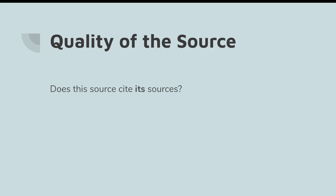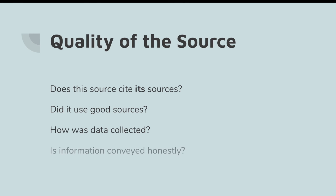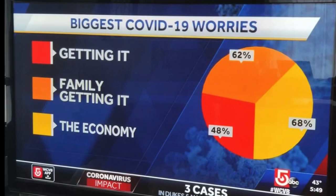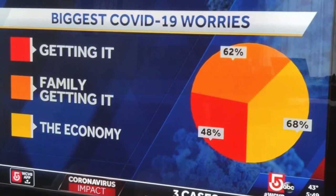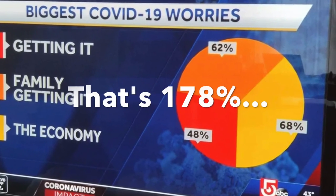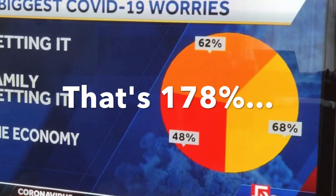Finally, we want to look at the information itself. If the source refers to other works or experts, it should cite those sources just like you have to. If you want to be extremely thorough, you might also consider vetting those sources in a similar way to make sure the author has actually done good research. If they present any data, they should tell you how it was collected, and the presentation should be straightforward. Some sources will publish misleading charts or graphs to make you interpret the data a certain way, so be sure to actually read the numbers.